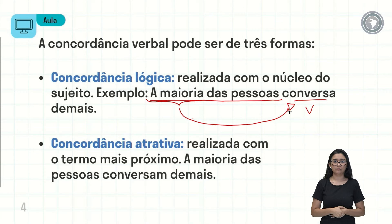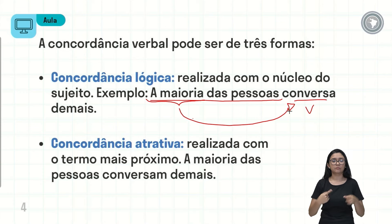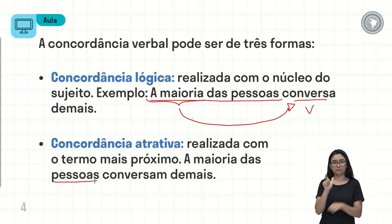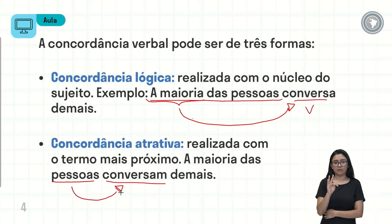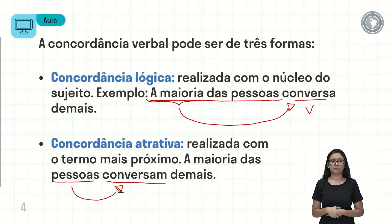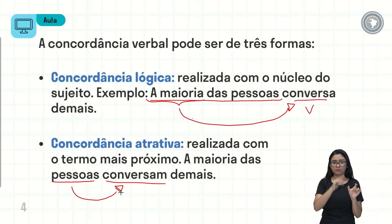Porém, também posso fazer a concordância com a palavra 'pessoas', que está no plural. Como ela está mais próxima do verbo, essa concordância será por atração. As gramáticas colocam como concordância por atração: a palavra 'pessoas' está mais próxima do verbo, então o verbo vai para o plural, concordando com 'pessoas'.